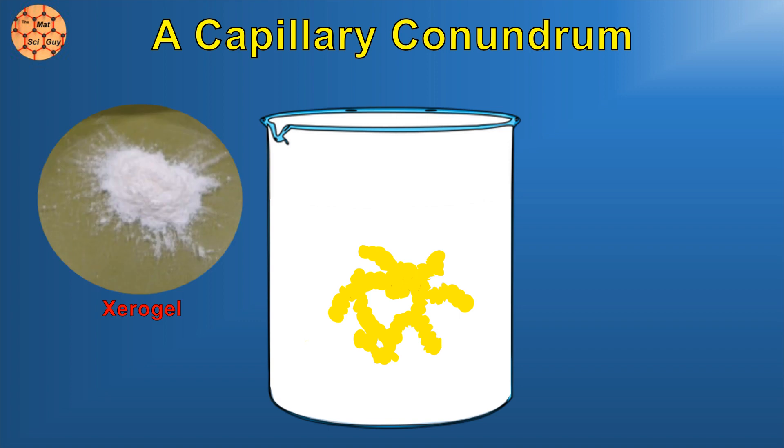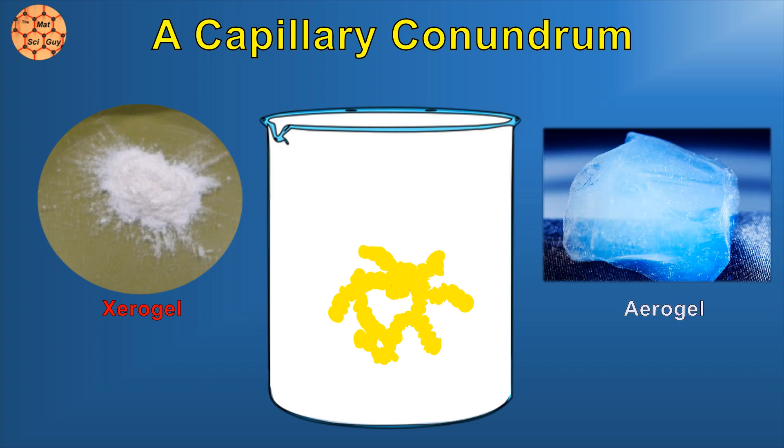This uncontrolled evaporation usually ends up collapsing the entire structure if we let it run to completion. The resulting powder, typically called a xerogel, still retains some porosity and is of use in certain applications, but it's a far cry from the nice solid brick we saw in the intro.